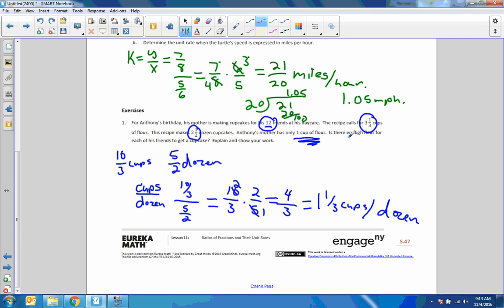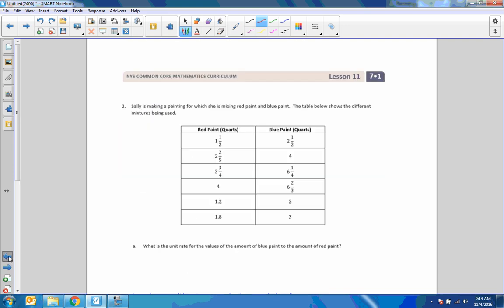So, you did a mathematical calculation, and you found the unit rate, which is 1 and 1/3 cups per dozen, which is actually the rate. Now answer the question. Is there enough flour for each friend to get a cupcake? Well, she needs 1 and 1/3 cups to make a dozen cupcakes. He has a dozen friends, and she only has 1 cup of flour, and she needs 1 and 1/3. So the answer is the answer is no. She is lacking a third of a cup. She has 1 cup. She needs 1 and 1/3. And you should say that with your explanation.